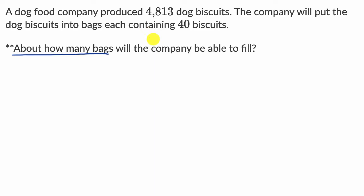All right, now let's work through this together. To figure this out, I'm just going to round some of these numbers so that I can work with them in my head. 40 is already a nice, clean, friendly number. I'm going to have to divide by 40. If I divided 4,813 by 40, I would get the exact number of bags the company would be able to fill.